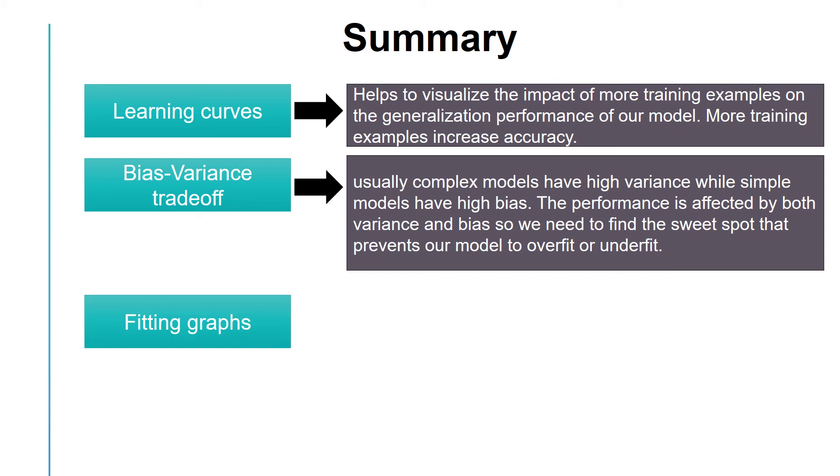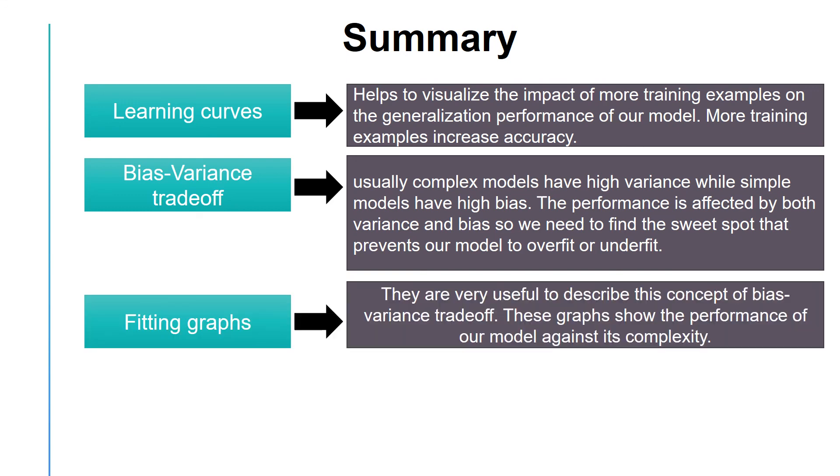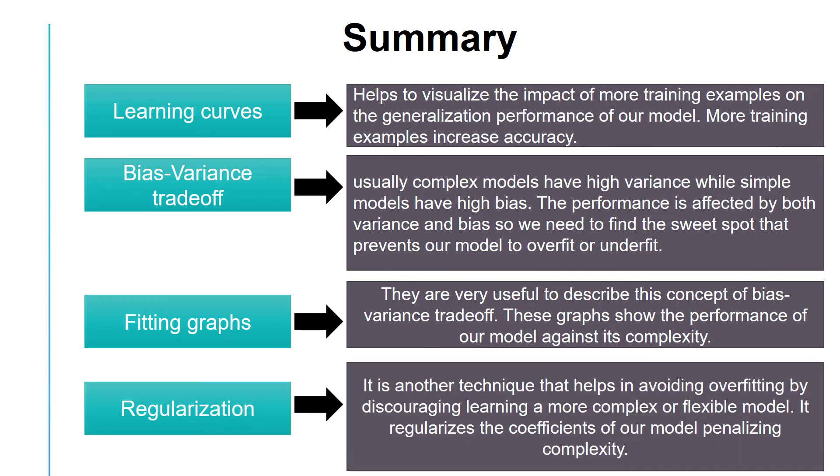We discussed the concept of fitting graphs, which are useful to describe the concept of bias variance trade-off. These graphs show the performance of our model against its complexity. Finally, we talked about regularization, which is another technique that helps avoid overfitting by discouraging learning a more complex or flexible model. It regularizes the coefficients of our model, penalizing too much flexibility.